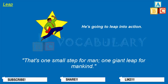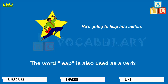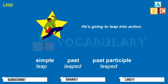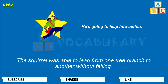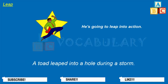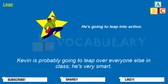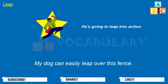That's one small step for man, one giant leap for mankind. The word leap is also used as a verb. The simple form is leap, past tense leaped, past participle leaped. The squirrel was able to leap from one tree branch to another without falling. A toad leaped into a hole during a storm. Kevin is probably going to leap over everyone else in class — he's very smart. My dog can easily leap over this fence.